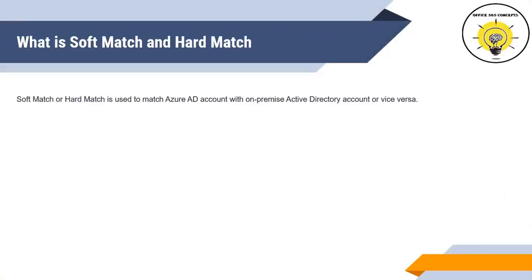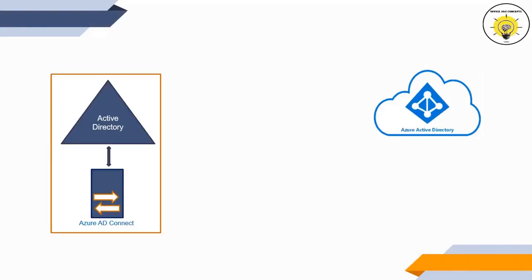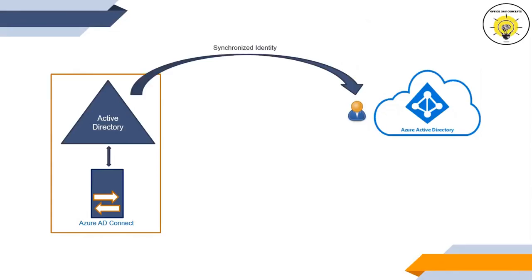Soft match or hard match is a process to match an Azure Active Directory account with an on-premise Active Directory account. When we synchronize a user account from on-premise Active Directory to Azure Active Directory, this is called synchronized identity. That means this user account is getting synchronized from on-premise Active Directory, and if you want to make any changes to the attributes of this particular account, all these changes will be performed from on-premise Active Directory.